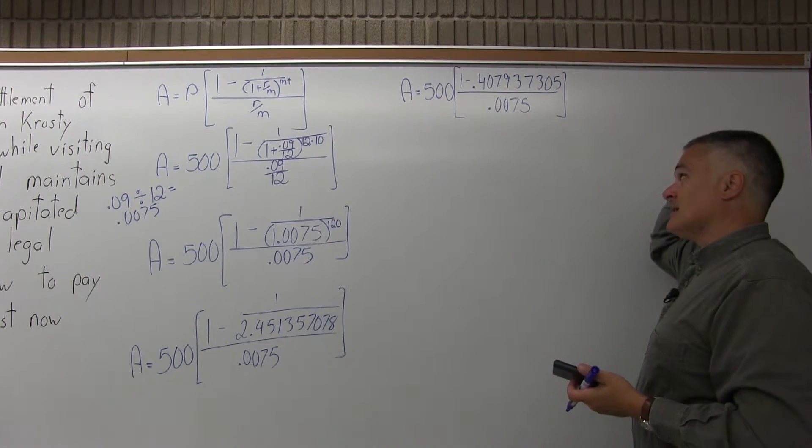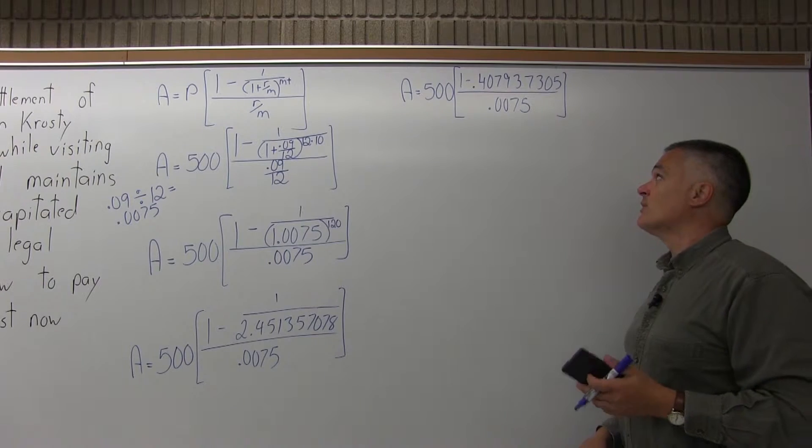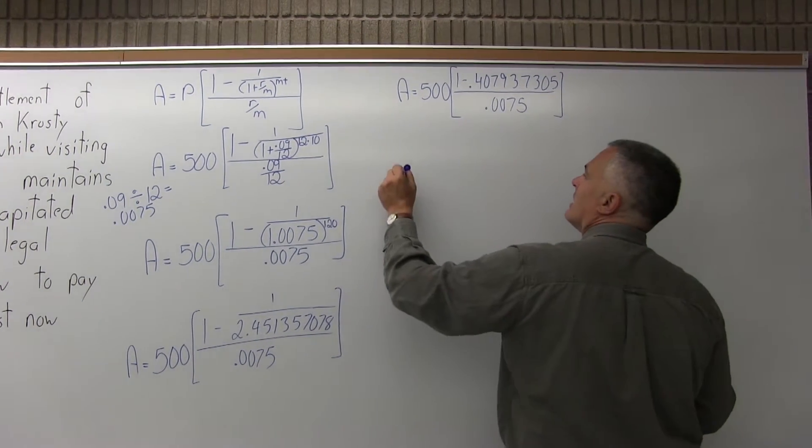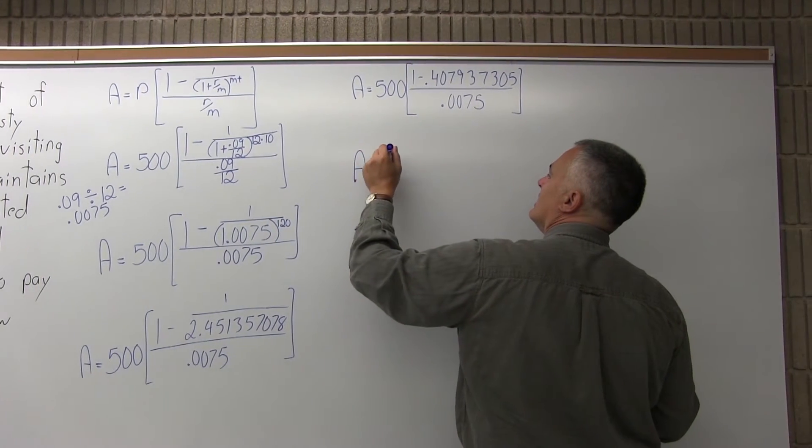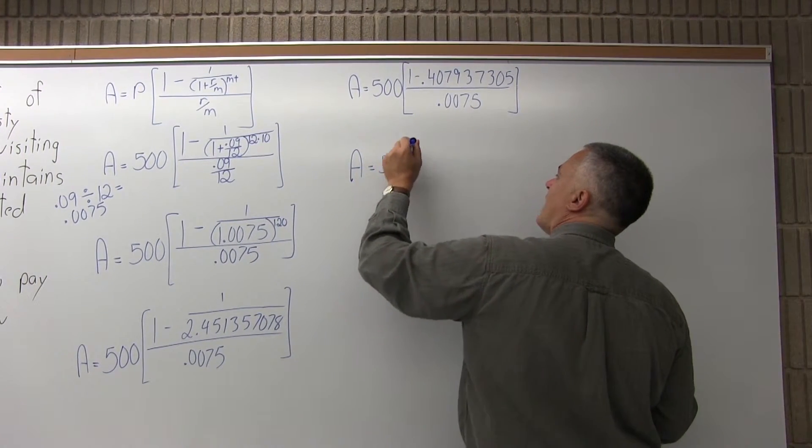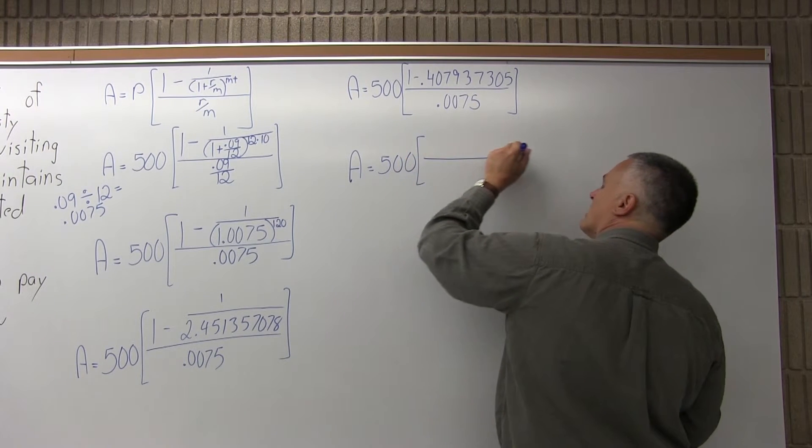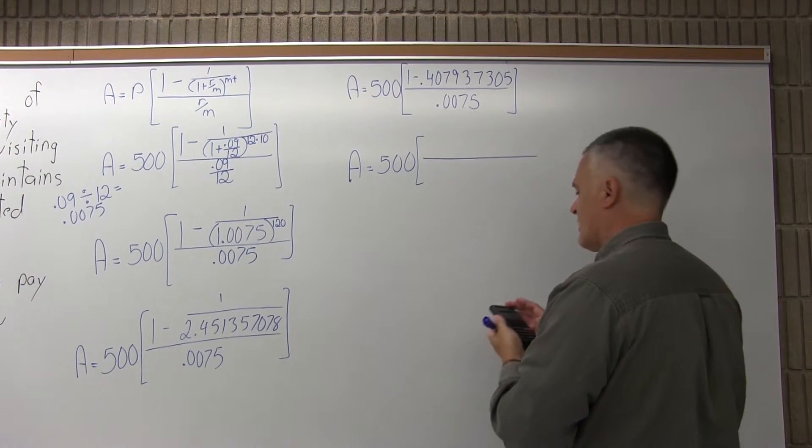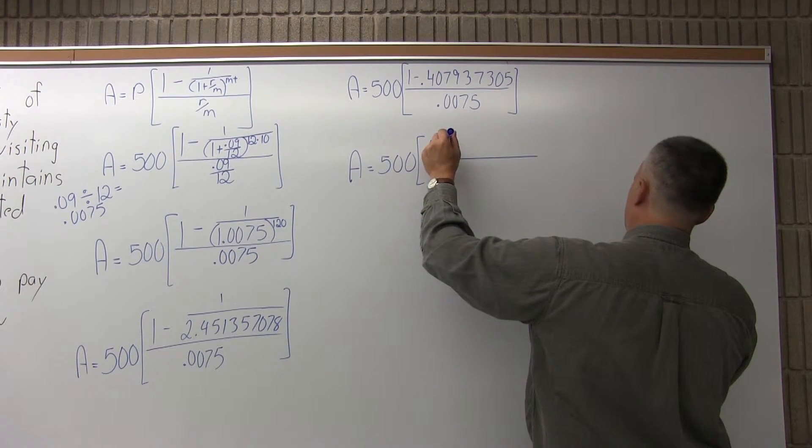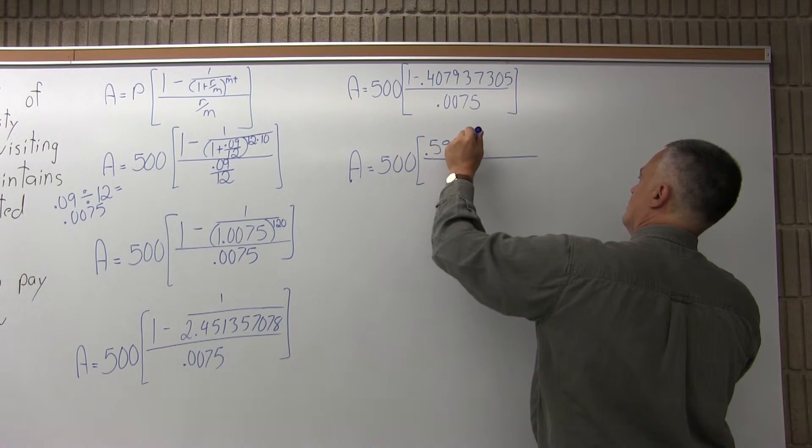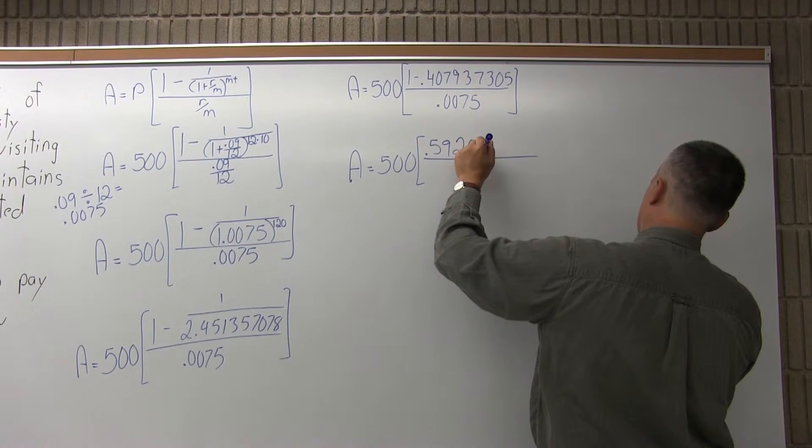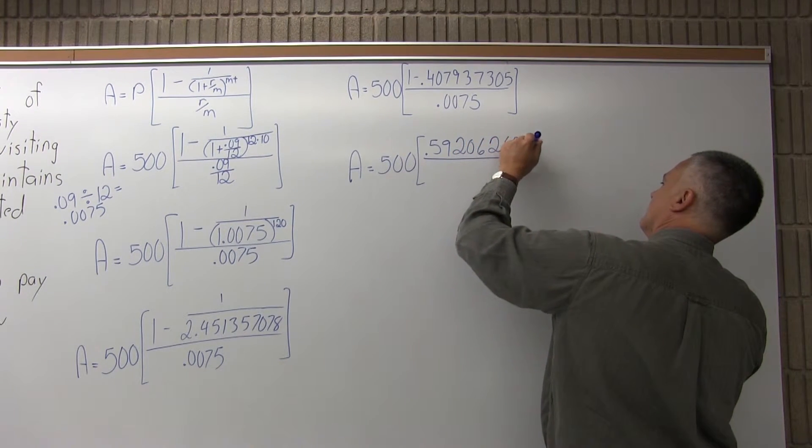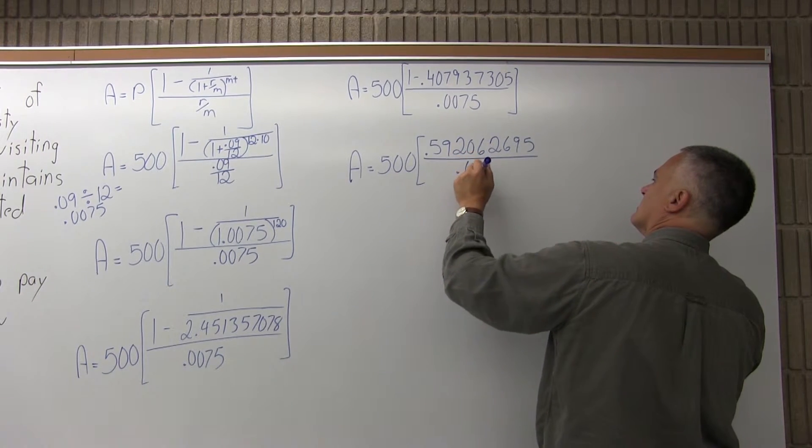So the top of the brackets still has a subtraction at 1 minus .407937305. So I'll do that subtraction. And that will give me A equals 500 times the brackets. The brackets will have, in the numerator, .592062695. And the denominator of the brackets, .0075.